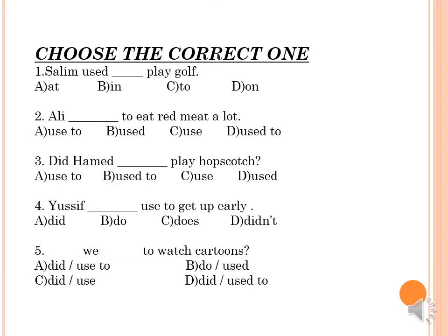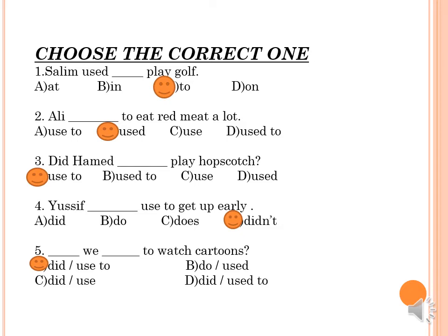Now let's answer the exercise — choose the correct one. Stop the video, answer the exercise, then we will check the answers. Let's check: Number 1 — Salem used to play golf. Number 2 — Ali used to eat red meat a lot. Number 3 — Did Hamid used to? Well done. Number 4 — Yousif didn't used to get up early. Number 5 — Did we used to watch cartoons? Excellent.